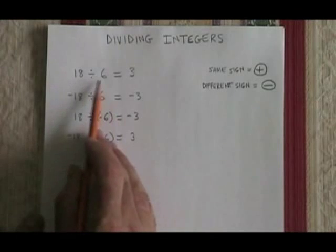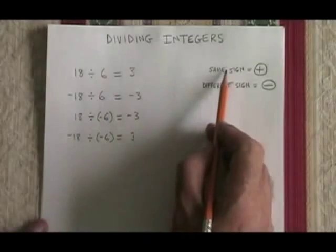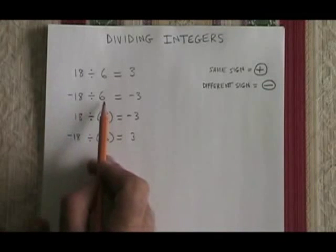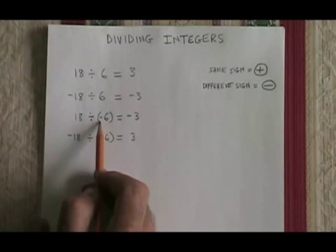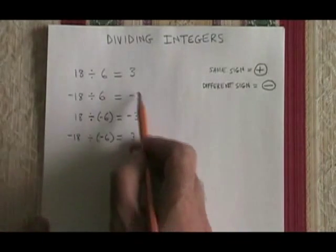If the two numbers that are being divided have the same sign, whether they're both positive or both negative, same sign equals positive, the answer will be positive. If the two numbers have different signs, regardless of whether it's the first or the second one that has the negative sign, different sign equals negative, the answer will be negative.